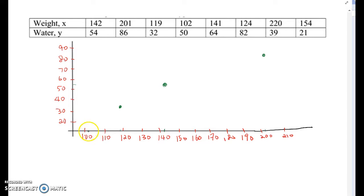And 119 and 32 here. And 102 and 50. And 141 and 64, so it's almost here. And 124, 82 is here. 220, so here's one more. I'm going to put 220 here, 220 and 39. And 154 and 21 here. That's the scatter plot of this data.